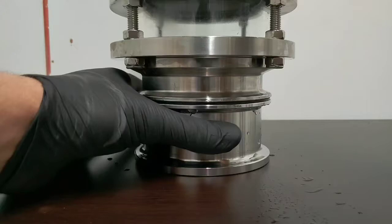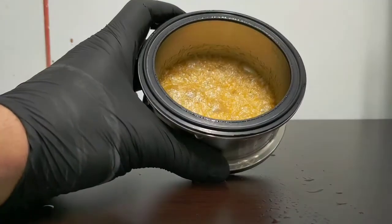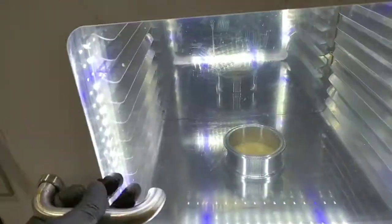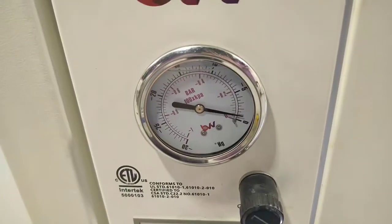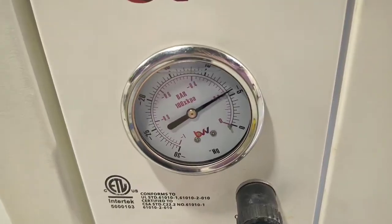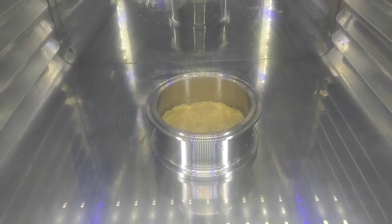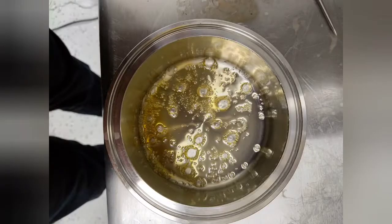Now you can remove the high-pressure clamp and proceed to purge the extract of residual solvent. Take the extract, place it in a vacuum oven, and apply light heat and vacuum until no more boiling is observed and extract consistency stabilizes. Then you can harvest your extract.